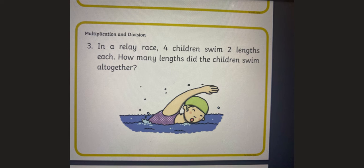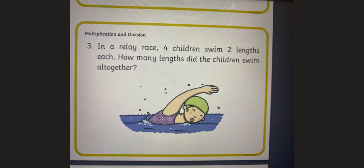Find this question and stick it in your maths book now. Have you done that? Well done. If you haven't done that, pause the video and stick it in your maths book now. The question says: in a race, four children swim two lengths each. How many lengths did the children swim altogether? So you've got four children and they've each swum two. You could draw four children and give each child two swimming pools, then count them up and write your answer on the sheet. Do this now. Pause the video.